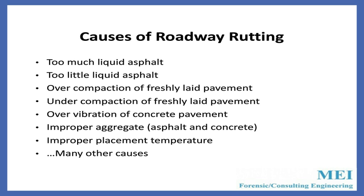Causes of roadway rutting: we're talking about asphalt pavements. Anyone who has ever done baking knows that once one thing is wrong with the cake mix, the whole thing is messed up. In asphalt, you can have too much liquid asphalt or too little. You can have overcompaction or undercompaction. You can also have overvibration in concrete. And then you have improper aggregate — both asphalt and concrete. Aggregate means rock, the stone, ranging from sand up to inch-and-a-half or two-inch stone. Improper placement temperature is also very important in asphalt pavement. If one thing is wrong, the whole cake mix is wrong.